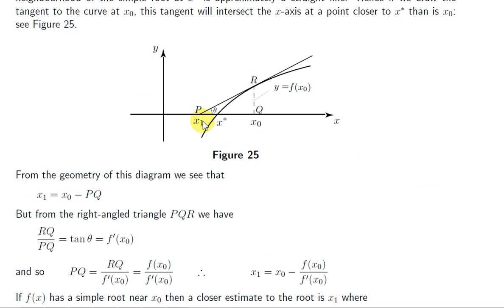We can see from the picture that x₁ = x₀ minus the distance p to q. We can also see that tan(θ) — the angle the tangent makes with the positive x-axis — is rq over pq, which is just the derivative of the function at x₀. Since rq is the value of the function at x₀, we arrive at the formula: x₁ = x₀ − f(x₀) / f'(x₀).